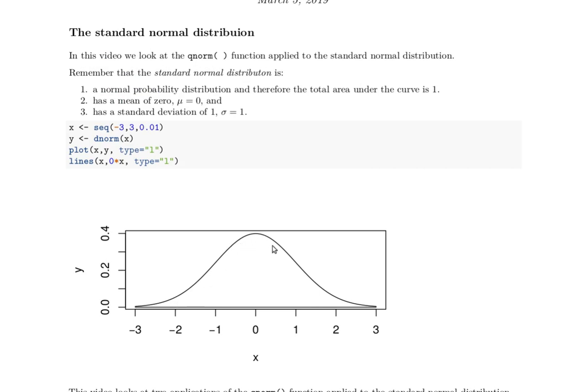Standard normal distribution is a normal distribution where the mean is 0 and the standard deviation is 1, so it looks very much like this.